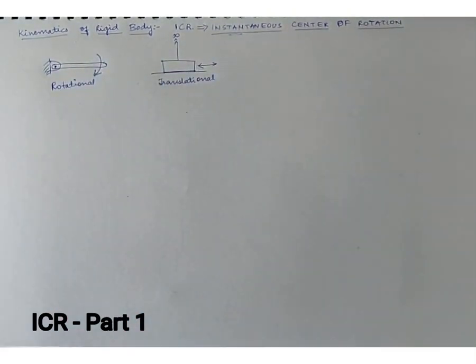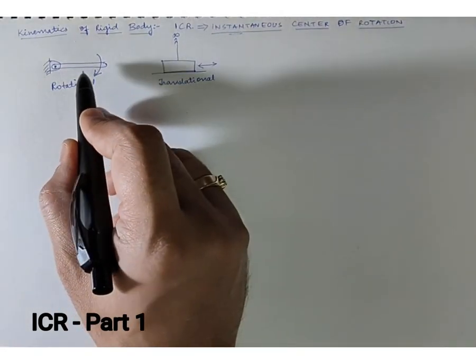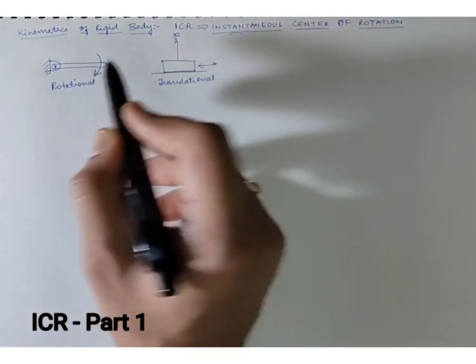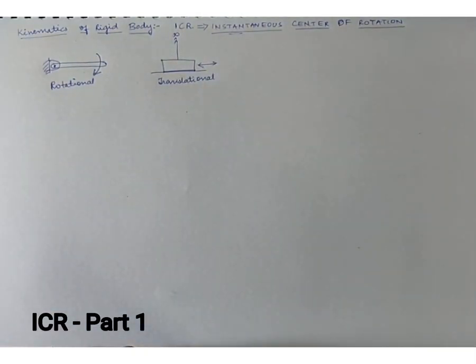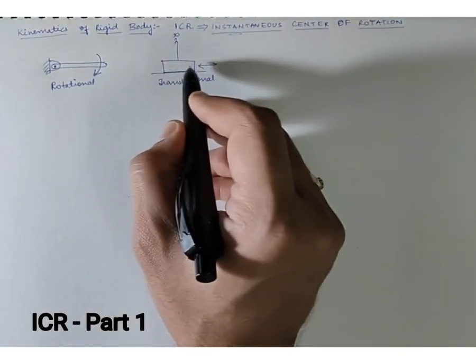But just imagine if we have a mixture of both. What should we be getting in that case? If an object has rotational motion and at the same time also has translational motion, what should our motion be called?